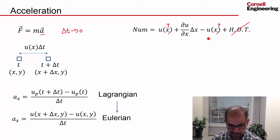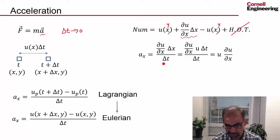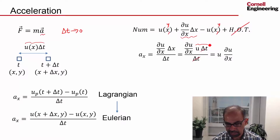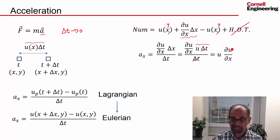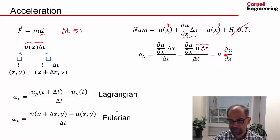Using that Taylor expansion in the numerator, the acceleration is the change in velocity — that term — divided by delta t. But delta x, the distance moved, is given by the velocity u times delta t. Substituting this and canceling delta t, I get u·du/dx as the acceleration in the x direction written in terms of the velocity field. And by the way, that's a nonlinear term because you have products of two unknowns.